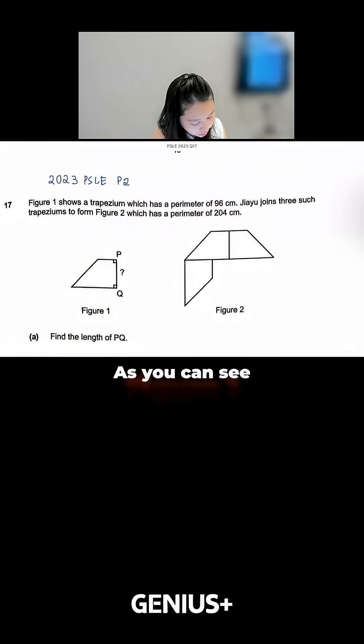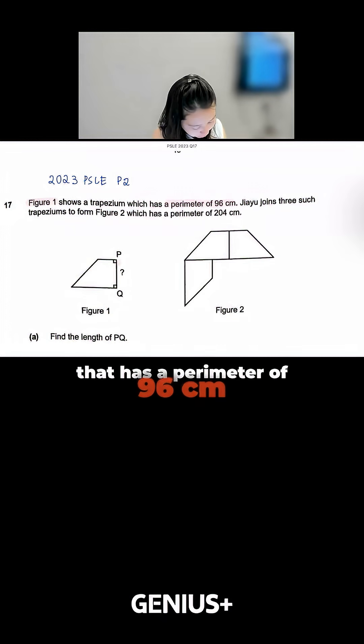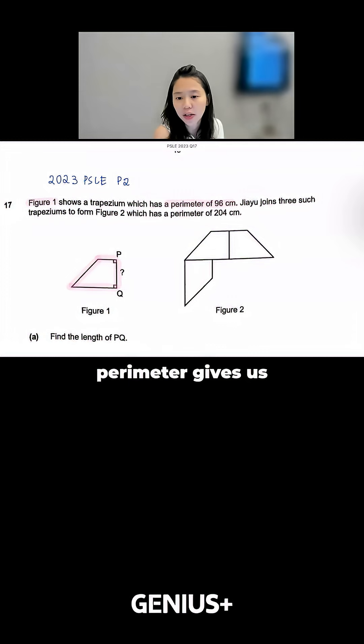As you can see, Figure 1 shows a trapezium that has a perimeter of 96. So this whole entire perimeter gives us 96.